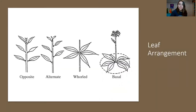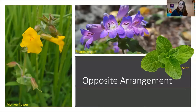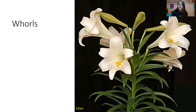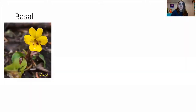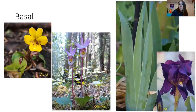Next, zoom out a little bit and see how those leaves are arranged on the stem. The most common is alternate, where they alternate along the stem. Next is whorled, where the leaves are whorled along the stem, and you're often going to see this in lilies. Finally, you have the basal leaves — these are the ones that grow from the base of the plant, and you're going to see this often in violets, orchids, and the unique fan shape of the irises.